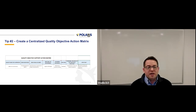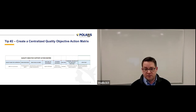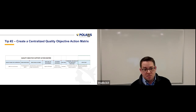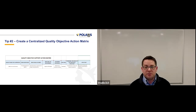Tip number two: create a centralized quality objective action matrix. Have an action plan somewhere where you can show what you're doing, what quality objective it's supporting, how did you identify it, who's going to be responsible, what are the required resources, and how will you know if it's effective. You can see an example on your screen here. That sounds a lot like clause 6.2.2 that says you need to determine what will be done by whom and when. Having a matrix like this makes that a lot easier — something you can print and show an auditor, or use internally at a management review meeting or a weekly production huddle.